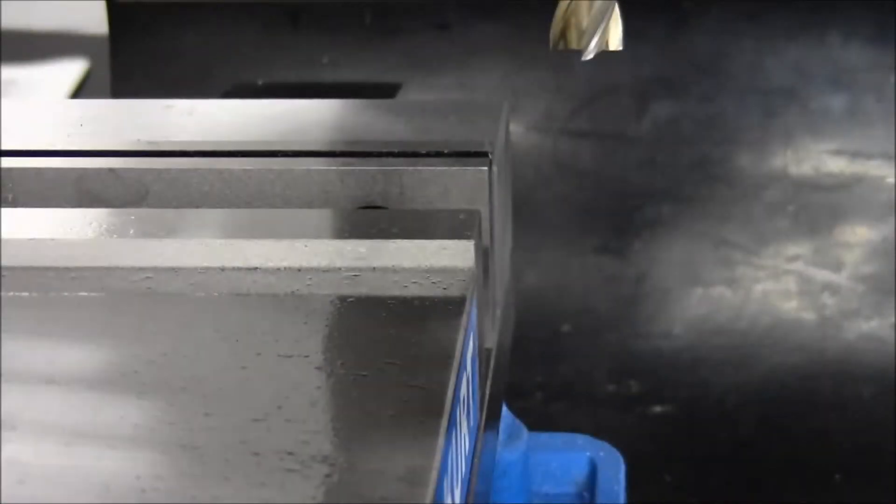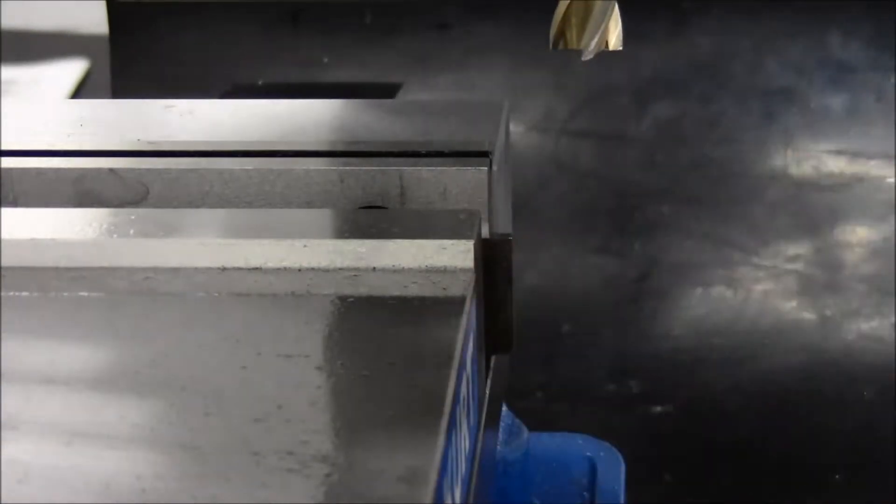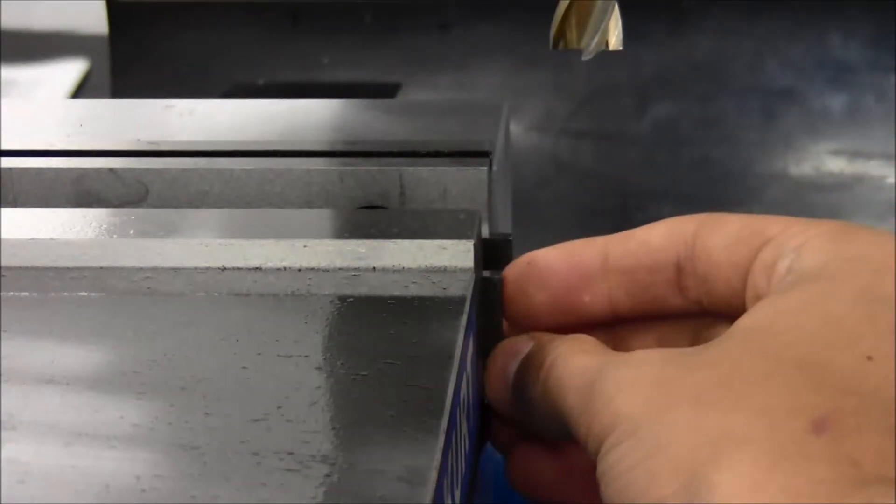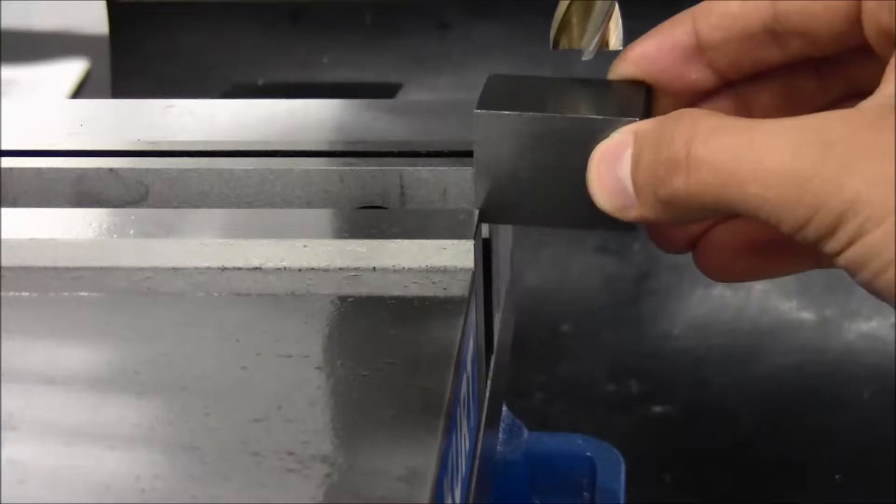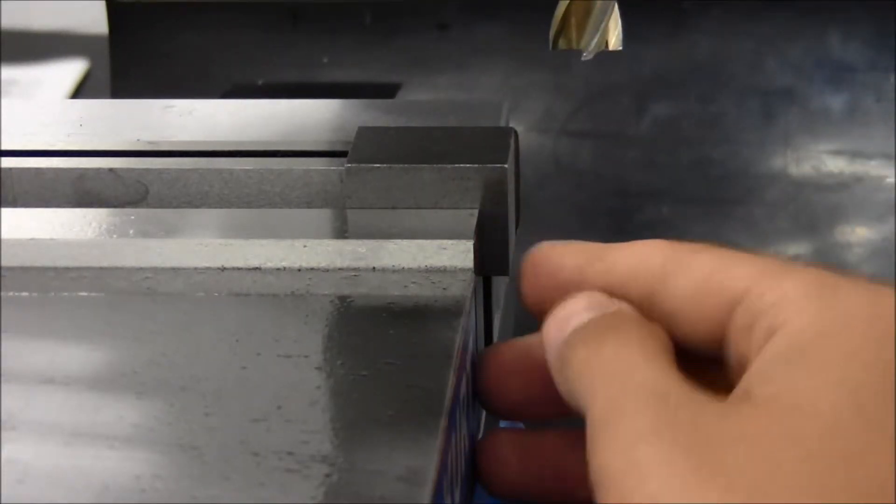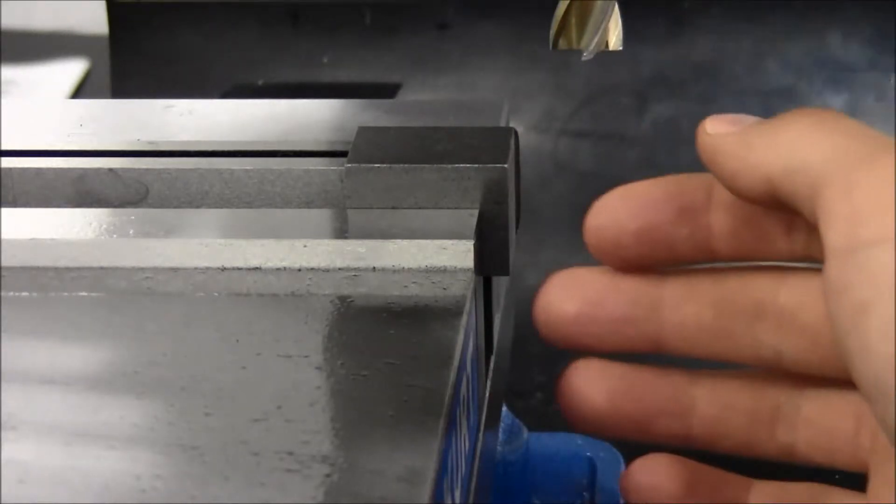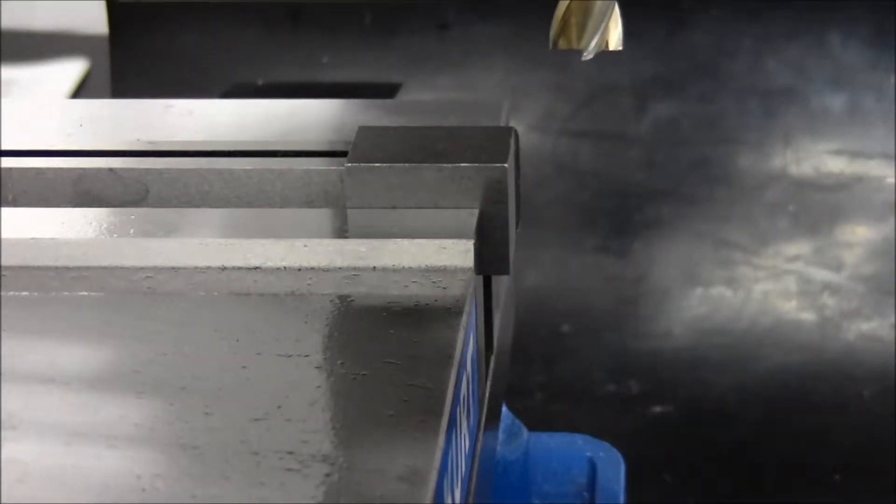To set your piece in the vise, first place a parallel along each side of the vise jaws. Then you place your piece on top of the parallels with enough protruding so that the mill does not risk damaging the vise. Then tighten the vise.